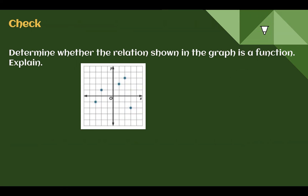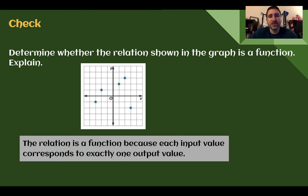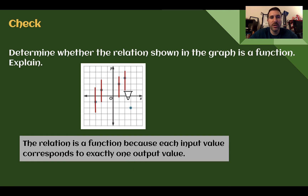Check your understanding: determine whether the relation in the graph is a function. This is a function. Each input only corresponds to exactly one output. Performing the vertical line test, each vertical line only went through one spot — that one only went through one point, that one only went through one point. Each place only went through one coordinate. This is a function.